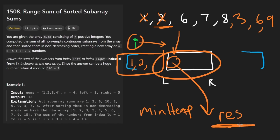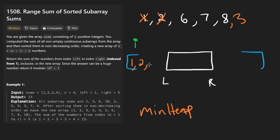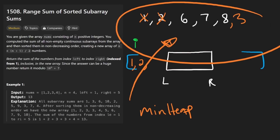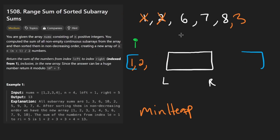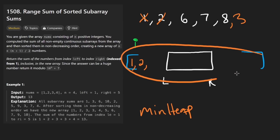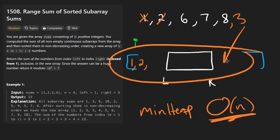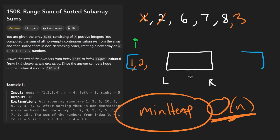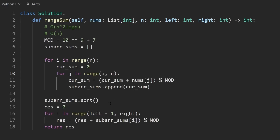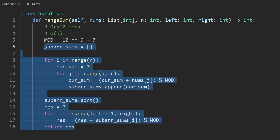You might wonder how anyone could come up with this solution. I'll be honest — this is insanely difficult to come up with. The space complexity is O(n) because we're never building a full array; we're only pushing and popping from the heap, which never exceeds size n.